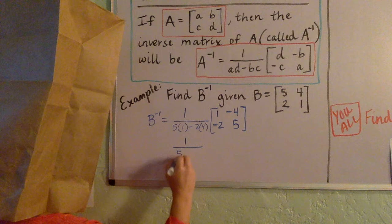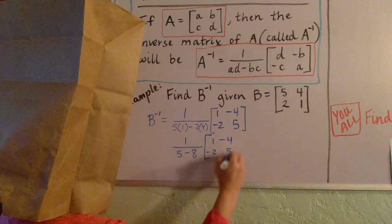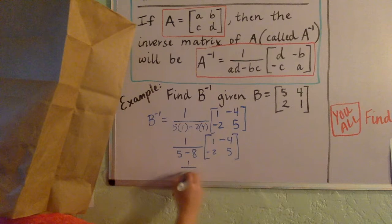So now what we have is 1 over, 5 times 1 is 5, minus 2 times 4 is 8. I'm not going to skip any steps here because I know this is already confusing enough. 1 over 5 minus 8 is negative 3.